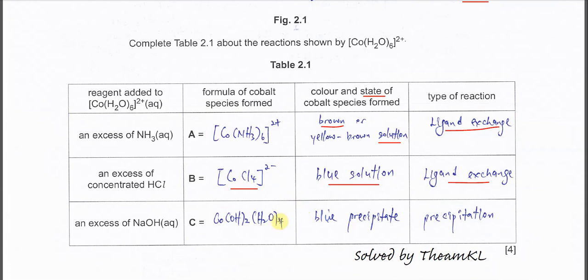And this one is a blue precipitate. So two H2O are removed and two hydroxide are added. So this is a precipitation because it forms a blue precipitate.